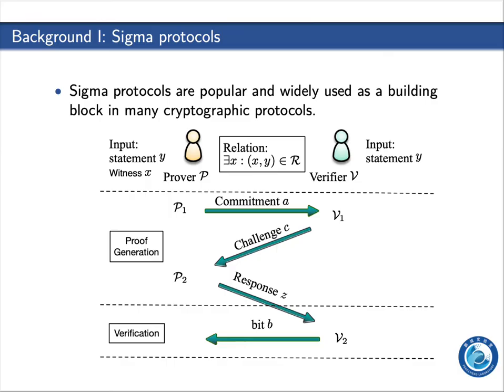As we know, sigma protocols are popular and widely used as a building block in many cryptographic protocols. Given a binary and polynomial time-decidable relation R and an instance X, Y belonging to R, a sigma protocol is an interactive protocol run by a prover and a verifier. During the execution, a commitment, a challenge, and a response are sent in turn by the prover and the verifier, where the challenge is randomly picked by the verifier.